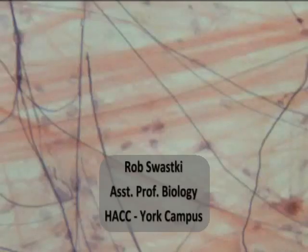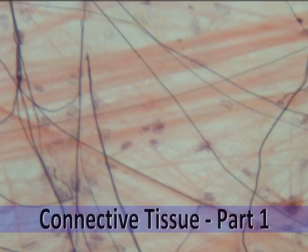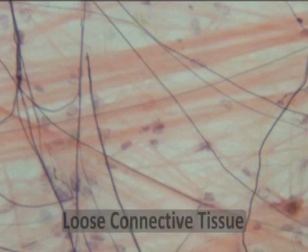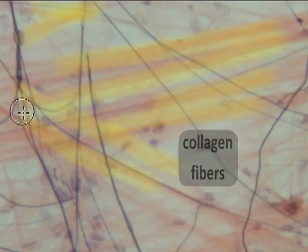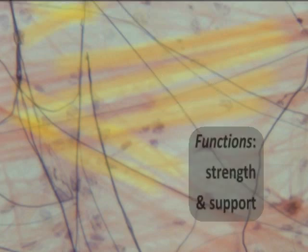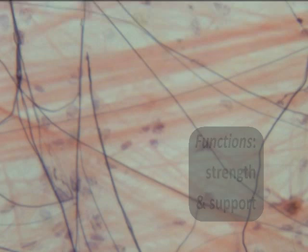Hello everybody, this is Rob Swatsky and this is our histology lab review screencast on connective tissue, primarily the loose connective tissues. Our first one that you're looking at here is areolar connective tissue, and the search image is fabric — it's almost like we're looking at a small piece of clothing underneath the microscope. We have these thick pink-stained collagen proteins crisscrossing and interwoven together to provide tremendous strength and support that areolar connective tissue is known for.